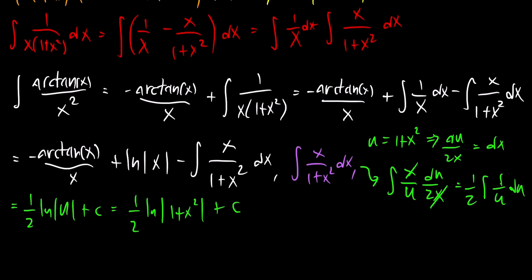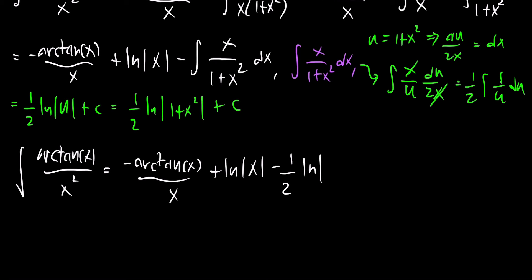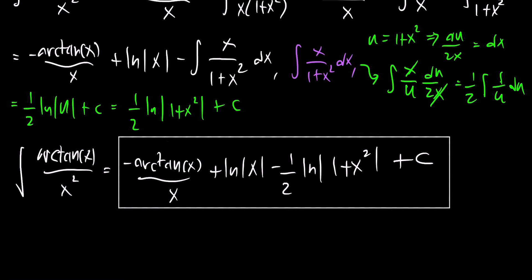Putting everything together, the integral of arctangent of x over x squared equals negative arctangent of x over x plus the natural log of x minus 1 half the natural log of 1 plus x squared plus c. This is the final result. Thank you very much for watching.